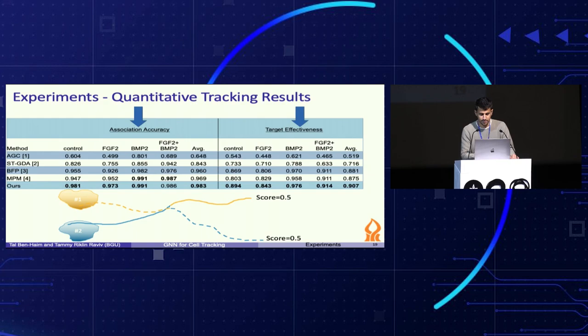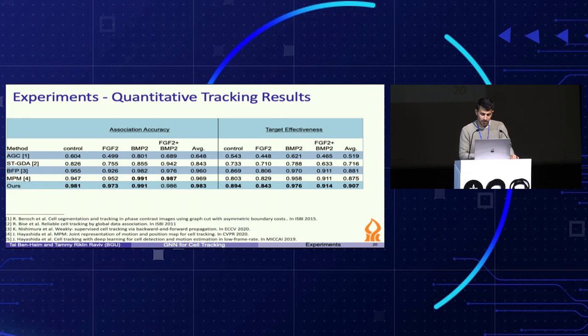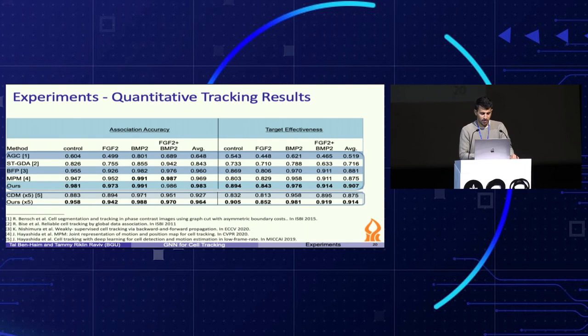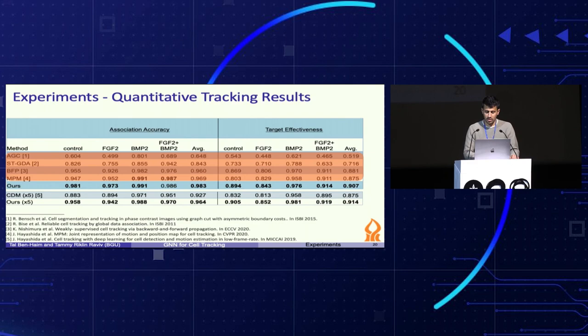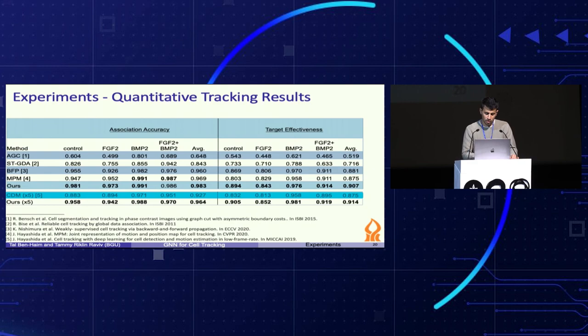We evaluate the performance of our method under four different dataset conditions while also computing the average overall. The results are evaluated in two settings. First, in a regular setting, we compare ourselves to classical and global solutions that also use graph formulation, and to local, greedy deep learning methods which reported state-of-the-art results. We outperformed all previous methods in almost all factors. Second, in a low frame rate setting, we compare results to a method designed for this specific task, and yet we got better scores.